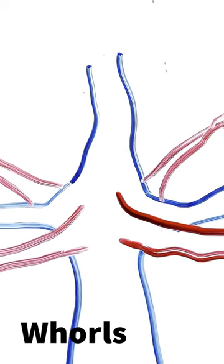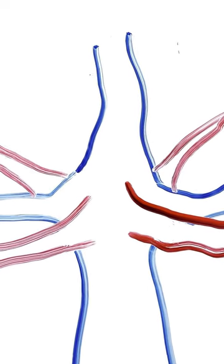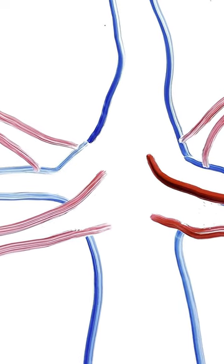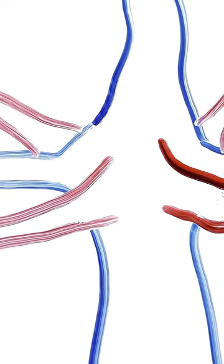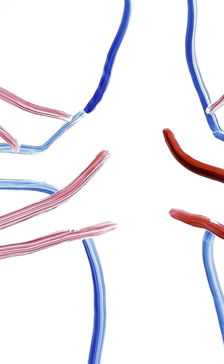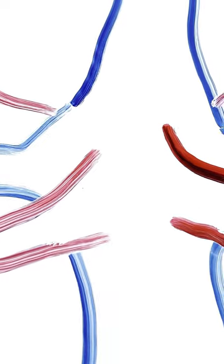Whorls of branches, where several branches emerge from the trunk at the same point or level. These can lead to a swelling in the trunk at that point causing inverse taper, where the trunk is unnaturally wider than the trunk below it. It's usual to reduce the number of branches at this point to avoid inverse taper.